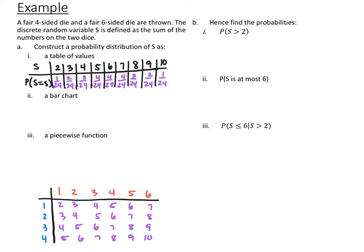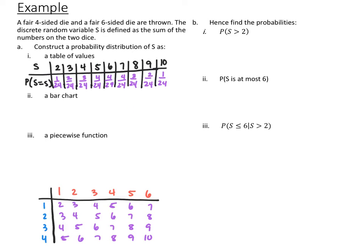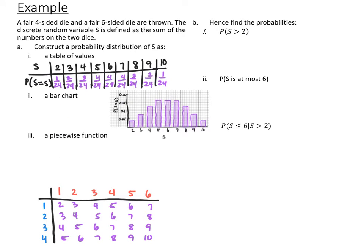My sample space diagram has die 1 (1–6) and die 2 (1–4), so totals range from 2 to 10. The probability distribution table lists all outcomes 2 through 10 with their probabilities: 2 and 10 are 1/24, 3 and 9 are 2/24, 4 and 8 are 3/24, and 5, 6, and 7 are each 4/24. The resulting bar graph is nicely symmetrical.